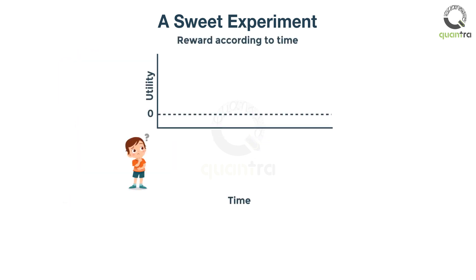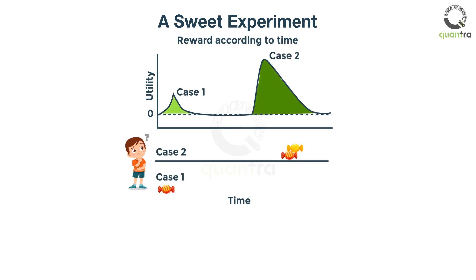In the figure on screen, we can see how this plays out. The spikes represent our reward, which is the utility associated with eating the sweets. We can see that for case two, it will be more pronounced and last longer.